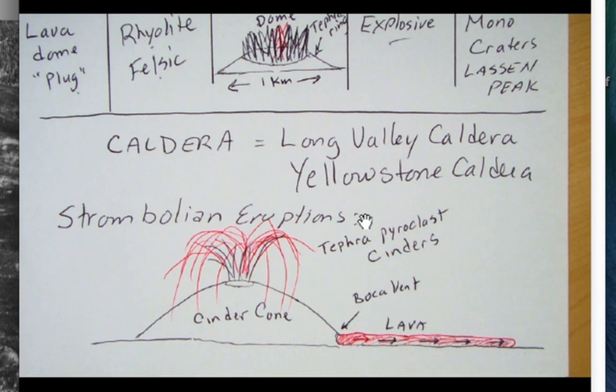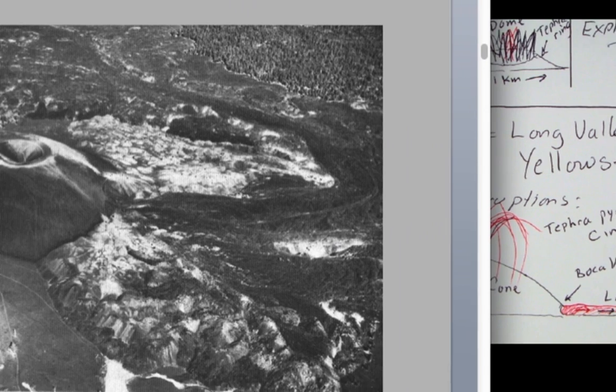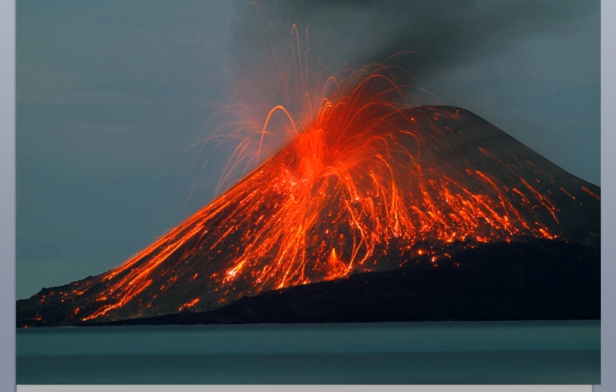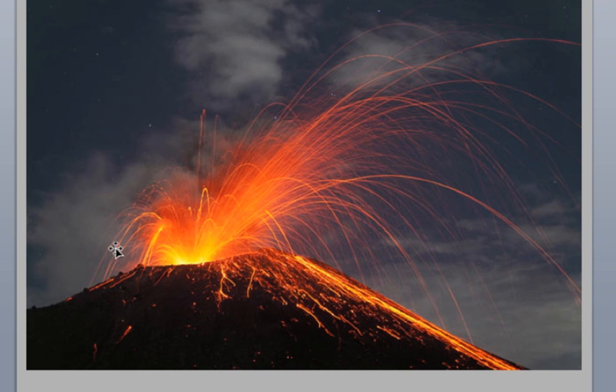And then this is a volcano that erupted in the last few years down in Sumatra on the island of Sumatra in the Indian Ocean, a classic Strombolian type cinder as you can see the cinder clasts, pyroclasts falling down there. Here's another view right here very spectacular, cinders flying through the air.